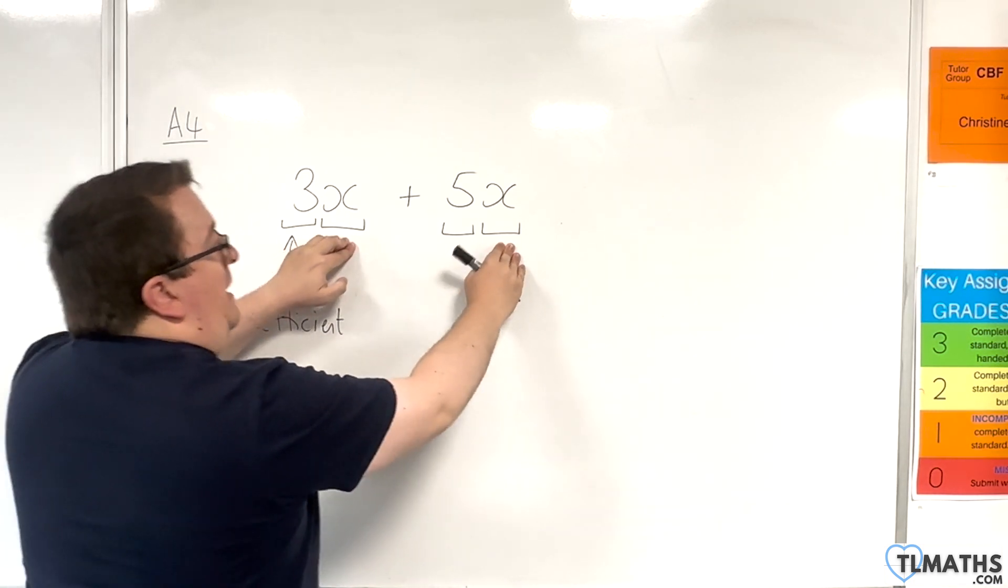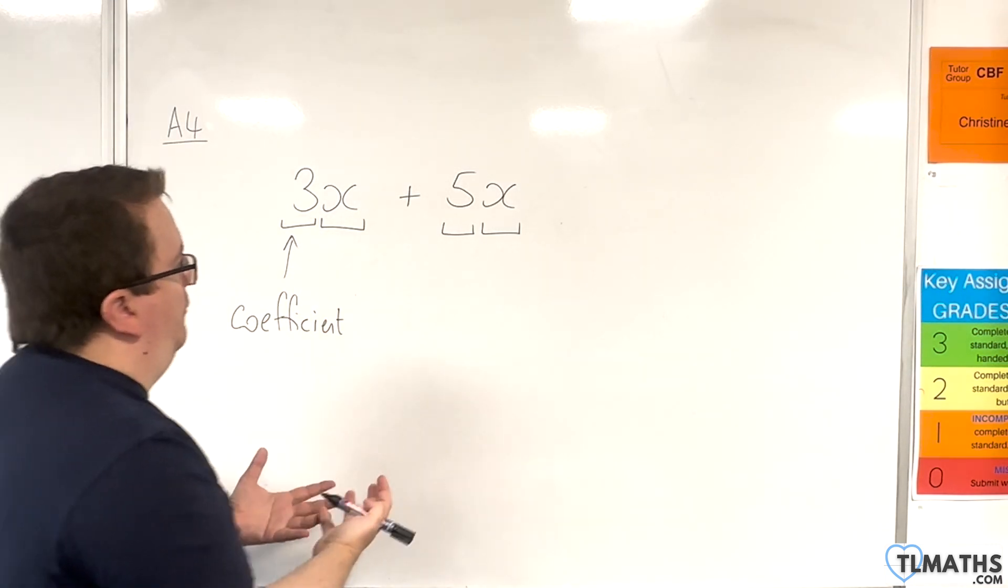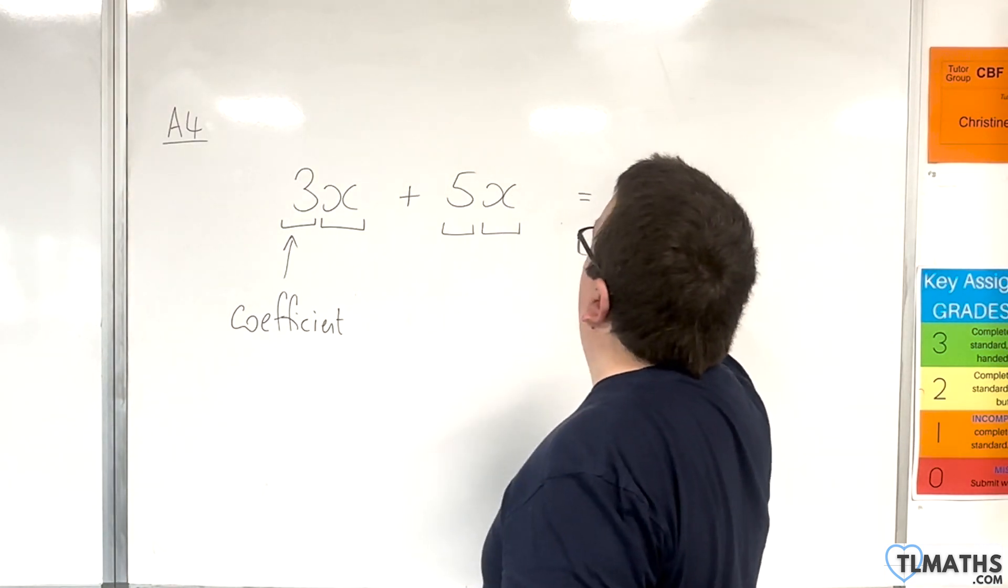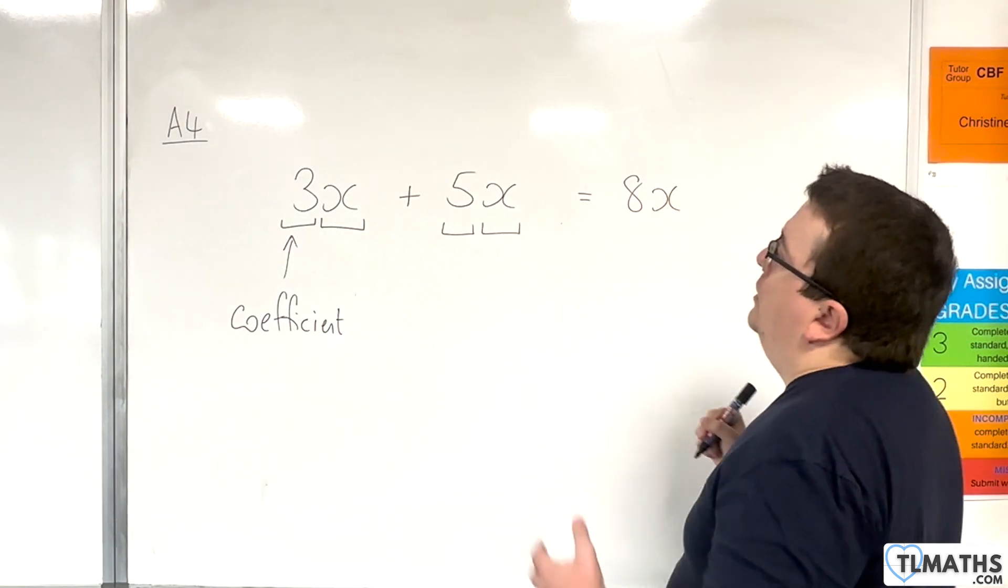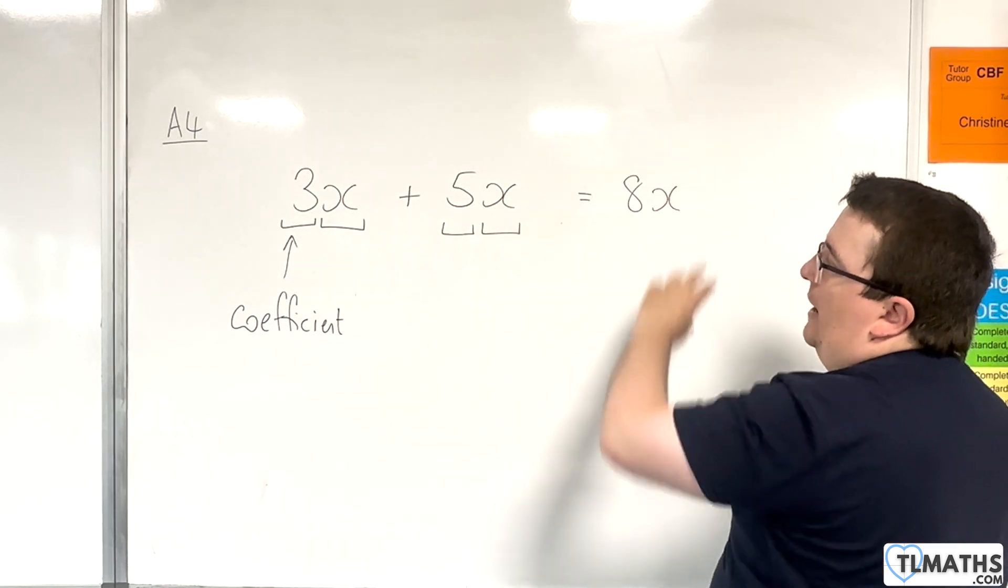So that means that you can collect those terms together and simplify this to be 8x. So we have 3x, we have 5x, we're adding them together, we get 8x.